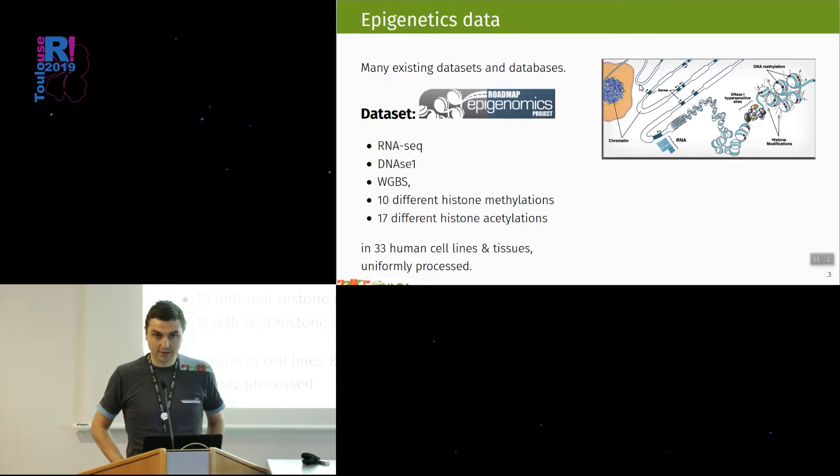Epigenetics data have been intensively studied in recent years with many existing datasets and databases. This talk will focus on the roadmap epigenomics data, which contains RNA-seq data, DNase1 data which is a measure of how accessible the chromatin is, whole genome bisulfite sequencing which is DNA methylation, ten different histone methylation marks, seventeen different histone acetylation marks in thirty-three human cell lines and tissues. Not all the histone modifications are available in all cell lines, but some are. The roadmap epigenomics project is kindly providing uniformly processed data for us.